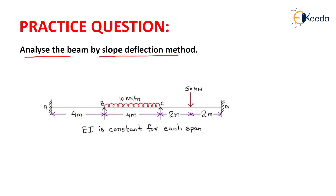We need to analyze this beam completely by the slope deflection method. This beam has supports A and D as fixed, a uniformly distributed load of 10 kN/m in span BC, and a point load of 50 kN at the center of span CD. The span lengths for AB, BC, and CD are each 4 meters, and EI is constant for each span.